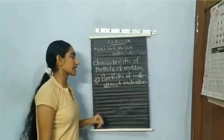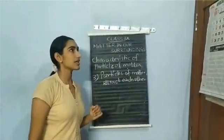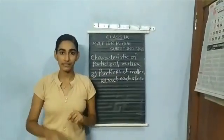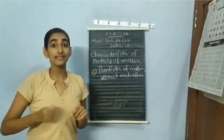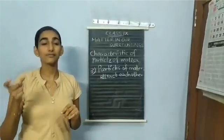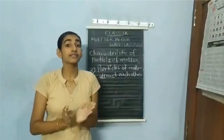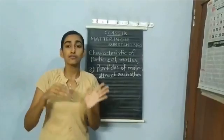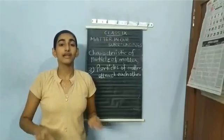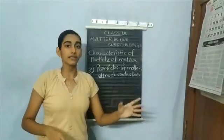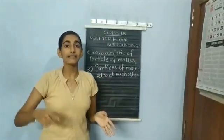The third characteristic is that the particles of matter attract each other. To demonstrate this, take an iron nail and a rubber band and hammer them. You will find that the iron nail has greater strength and will not break, but the rubber band will lose its strength. From this, we can conclude that the strength — that is, the force of attraction — varies from matter to matter.